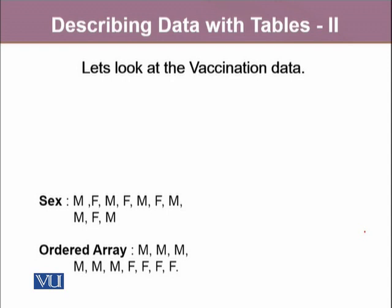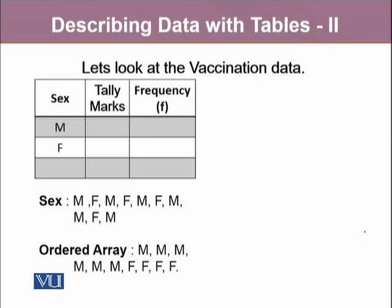Therefore, it doesn't matter if we write male first and female second, or female first and male second. To construct a frequency distribution, firstly we'll make a grid where the first column is the class column. A class column contains all the possible categories of our categorical variable. In this case, the two distinct possible categories are male and female.